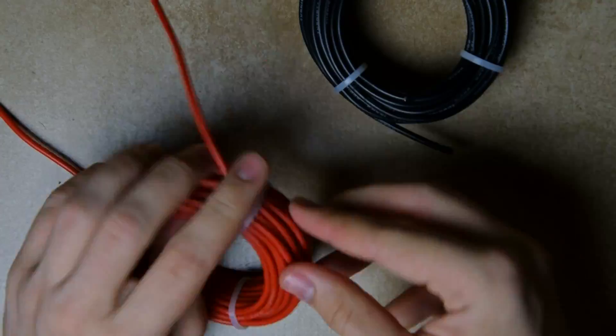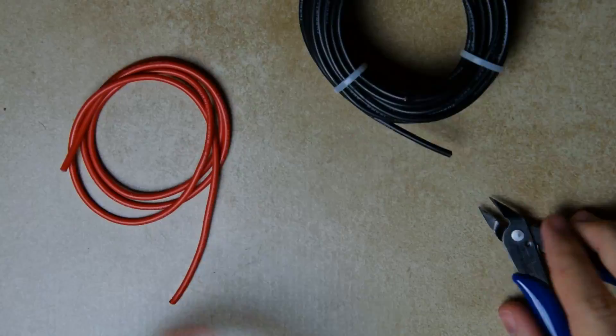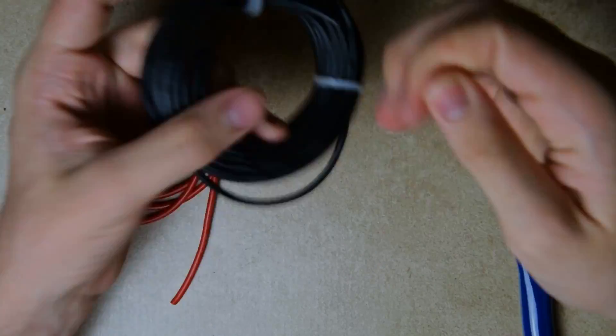The first step is to measure and cut an appropriate amount of the silicone wire. Here I will use the same length as the original cables for comparison.